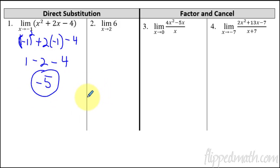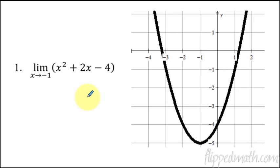You just tried direct substitution, and if you think about what the graph is, the graph looks like this. So this is just a parabola, x squared plus 2x minus 4. As x approaches negative one, what's the y value approaching? It's approaching negative five right there. Very simple.